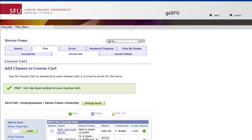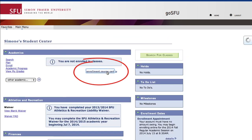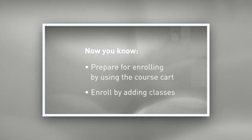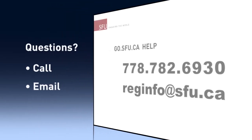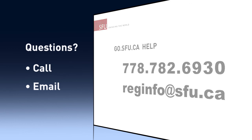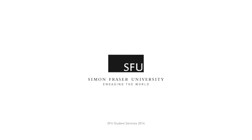Let's return to the Student Centre homepage. If you're not ready to enroll, just click the Enroll link under the Academic section when you are ready. Now you know how to prepare for enrolling by using the course cart and how to enroll by adding classes. If you have any further questions, contact the GoSFU helpline at 778-782-6930 or email reginfo@sfu.ca.